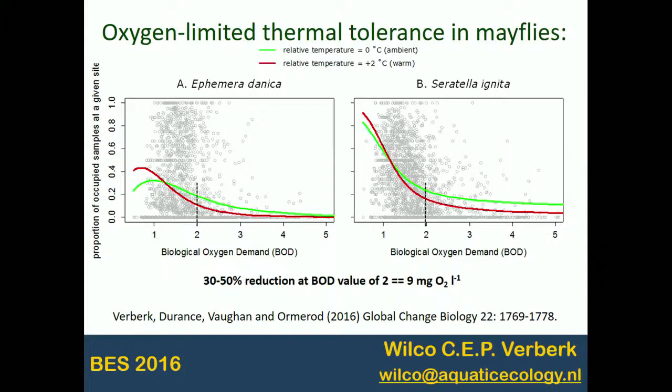This was at values of BOD of two, which corresponds to roughly nine milligrams oxygen per liter — fairly good water quality. Even at those very modest declines in oxygen, you already see a 30 to 50% reduction in occupancy. In contrast to the experimental situation, we see these interactive effects in the field at much lower temperatures and much more benign oxygen conditions, suggesting it really is a mechanism with ecological relevance.